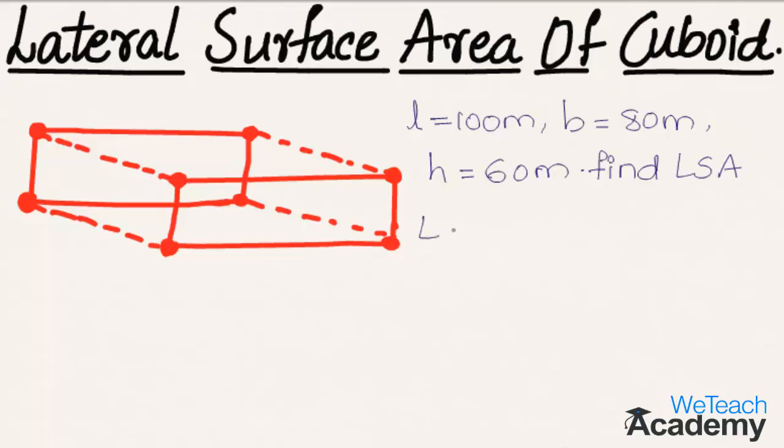We already know that lateral surface area of cuboid is given by the formula 2h(l + b). By substituting the values of l, b, and h in the formula, we get 2 times h, that is 60, into the length 100 plus 80.